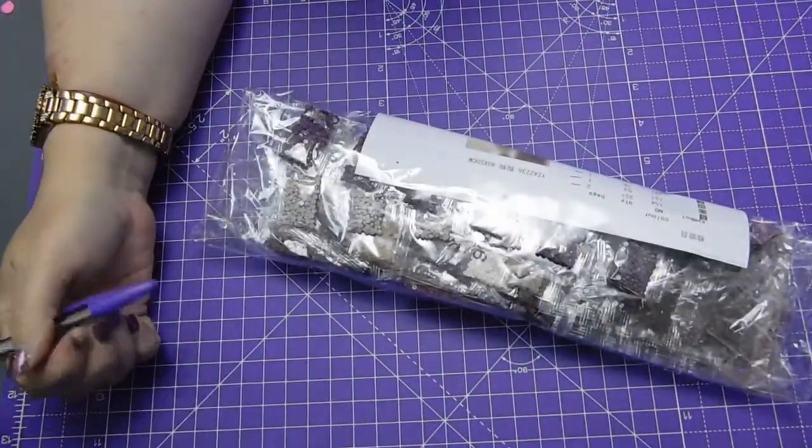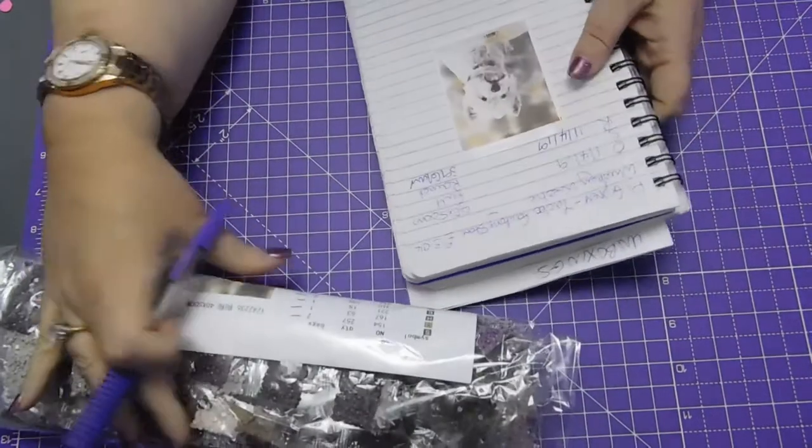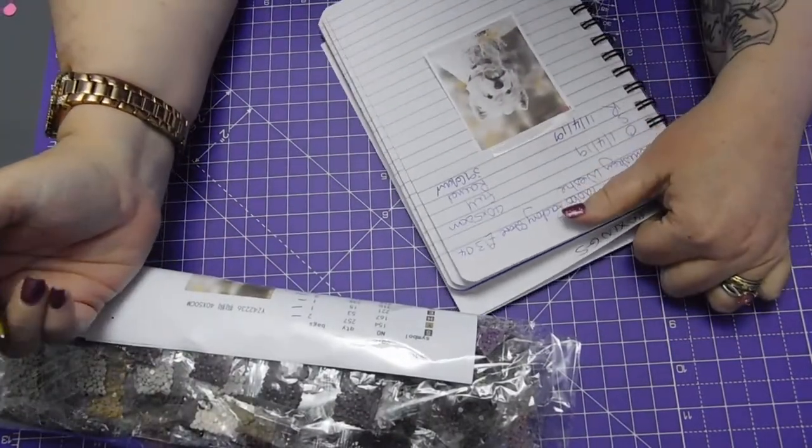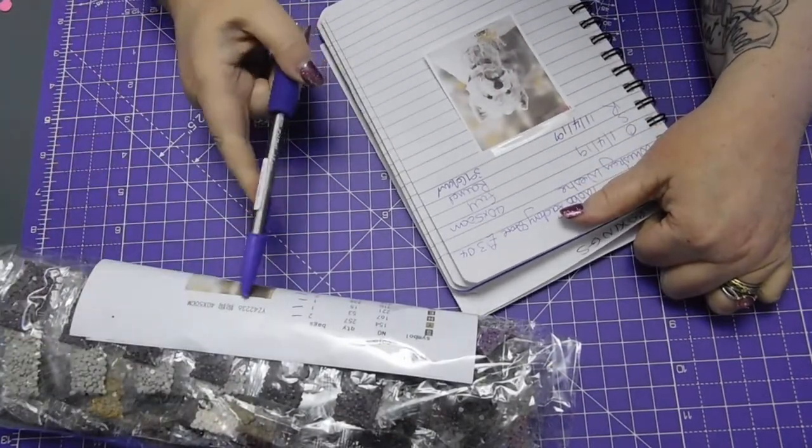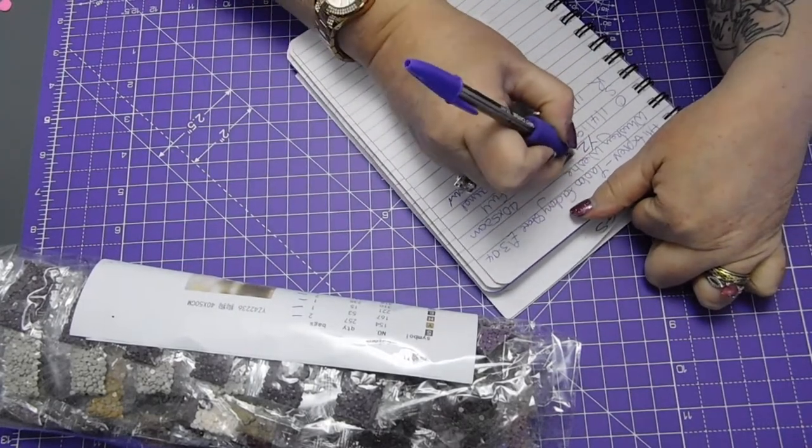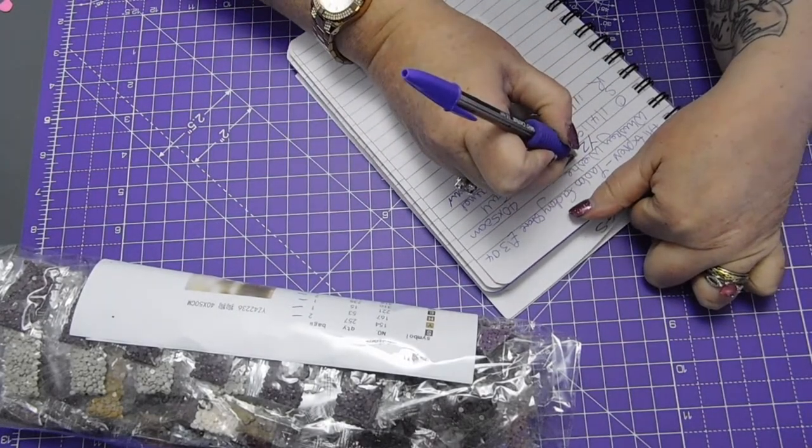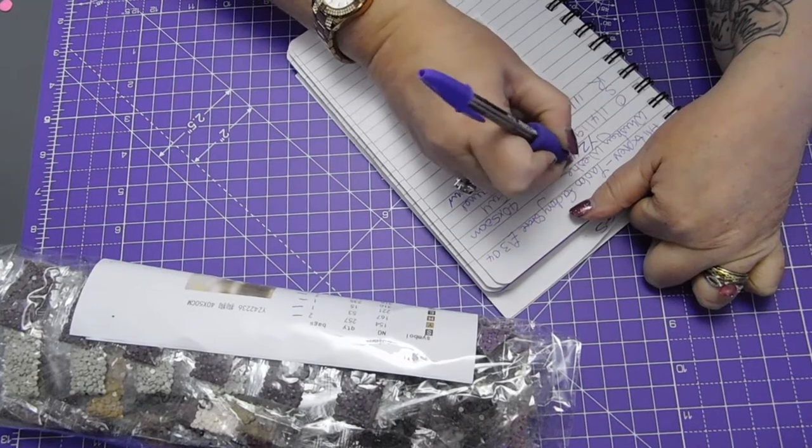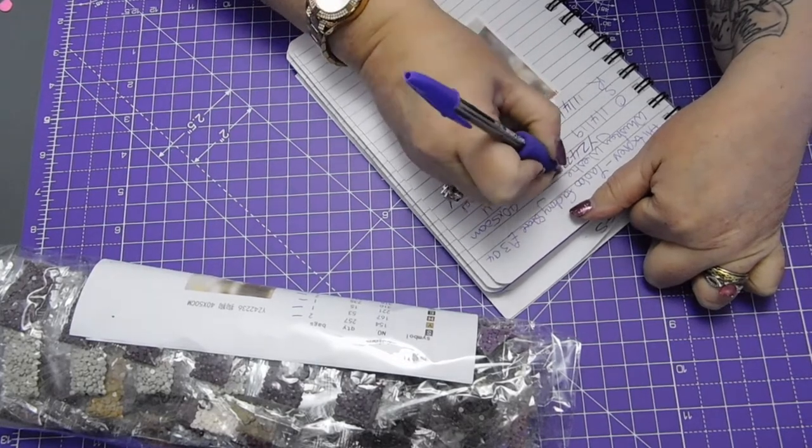So that's the inventory, everything present and correct, the beads look good. There's a code on the inventory sheet, YZ42236.